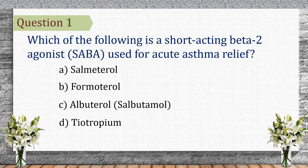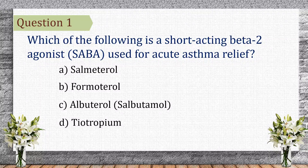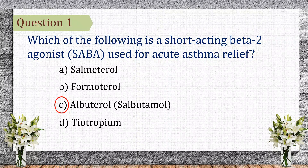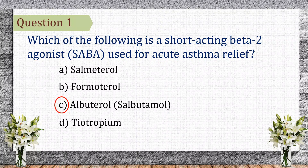Question 1. Which of the following is a short-acting beta-2 agonist used for acute asthma relief? The correct answer is albuterol, also known as salbutamol. Albuterol is a short-acting beta-2 agonist that quickly relaxes airway muscles, making it the first-line treatment for acute asthma attacks.